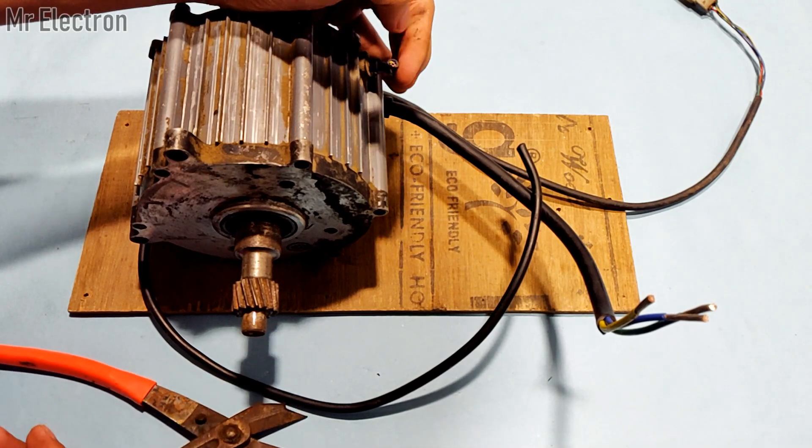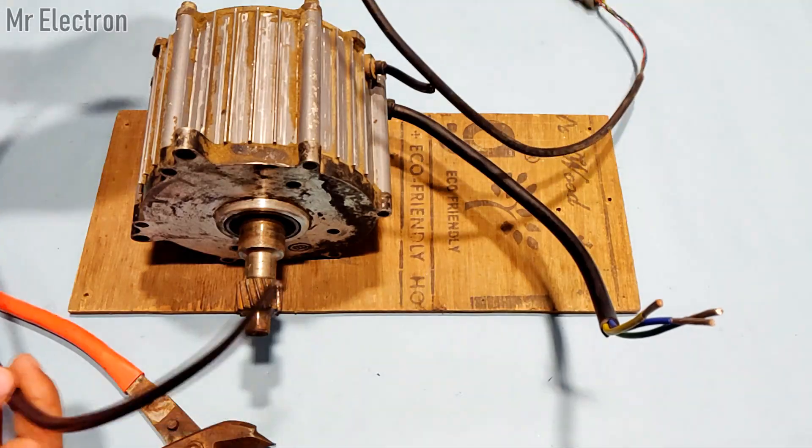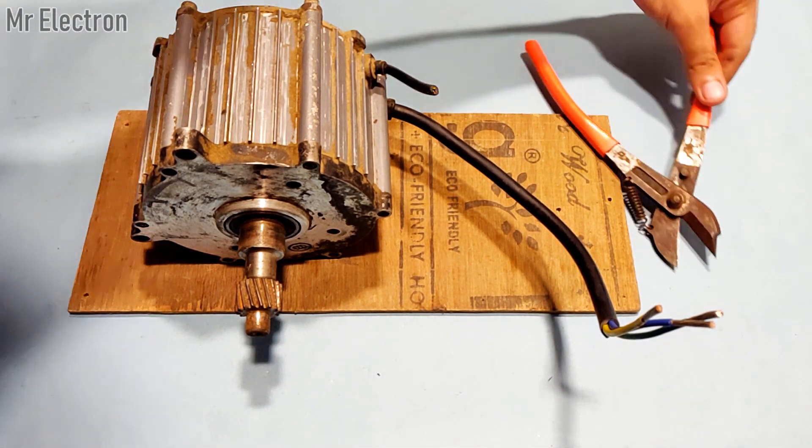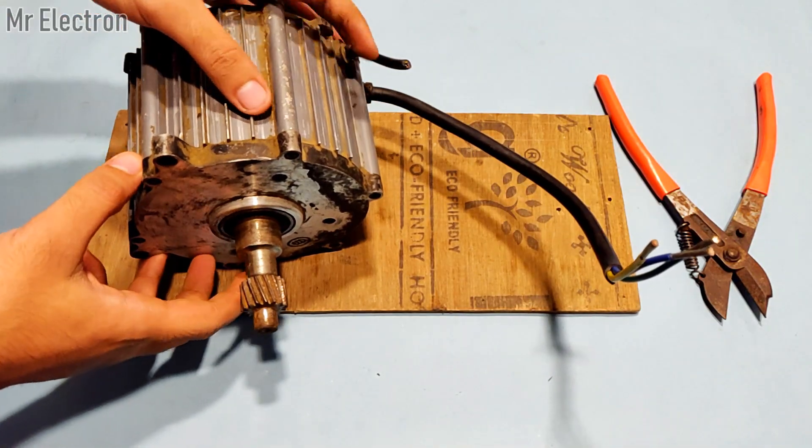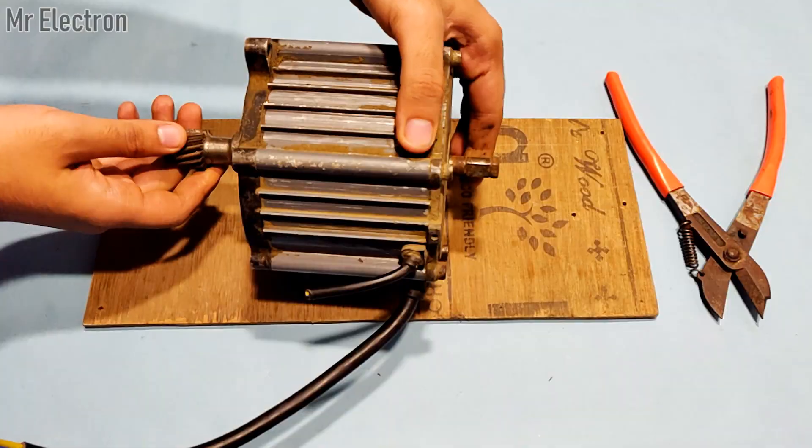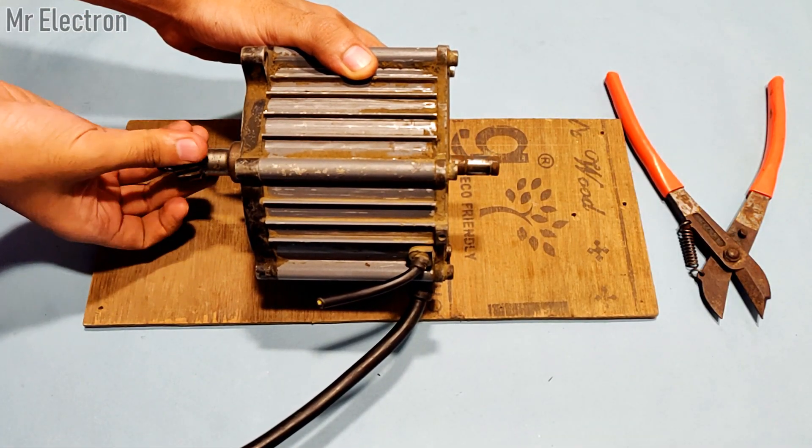BLDC motors containing ferrite magnets are easy to rotate, but these BLDC motors use neodymium magnets that have real strong magnetic locking which makes them really difficult to rotate with hands.